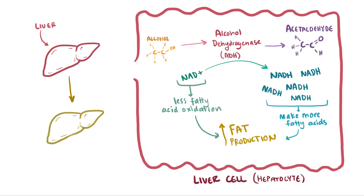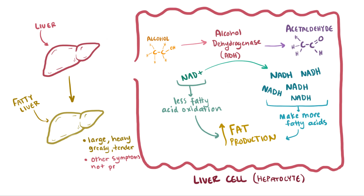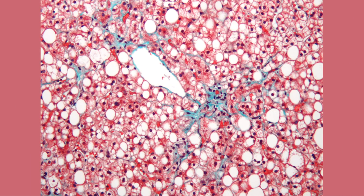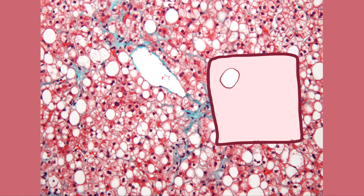Excessive fat in the liver is also known as fatty change, or fatty liver, where it gets large, heavy, greasy, and tender. But typically at this point, patients don't have symptoms like fever or high levels of neutrophils in the blood. The liver often takes on a more yellowish color due to all these fat deposits, and we can see that on histology. All these circles are deposits of fat that contribute to fatty liver disease, and sometimes this buildup is referred to as steatosis.